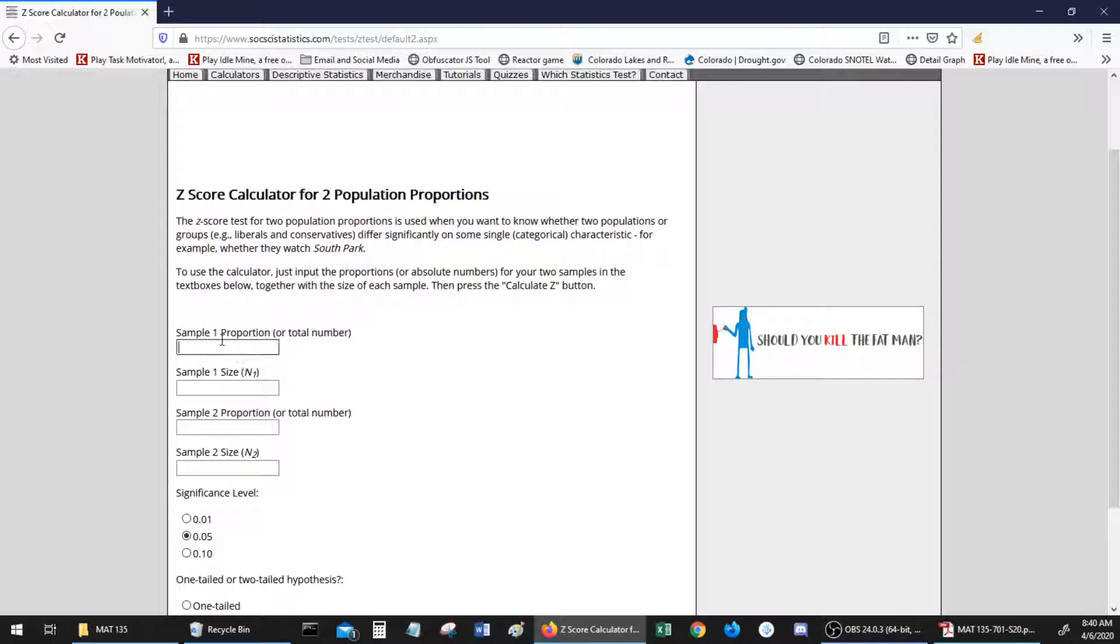Here's all you have to do. Type in your first sample number, that's x1, so we type in 227. Type in the sample size, 2075. And then you do the second proportion, 53 and 390.